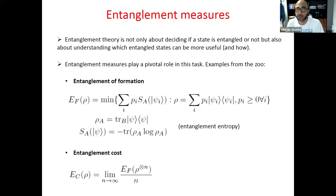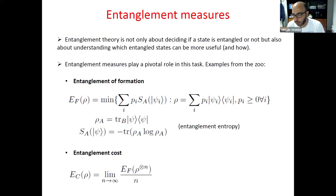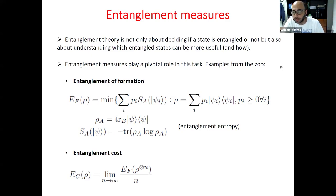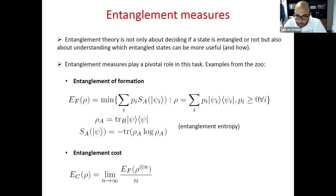Entanglement theory is not only about deciding if a state is entangled or not. We want to understand which entangled states can be more useful, and how and why. For this task, entanglement measures play a pivotal role. Since the beginning of entanglement theory in the early 90s, a myriad of entanglement measures have been defined, many of them having an operational meaning attached. This has sometimes been called the 'zoo of entanglement measures.' I will give a partial list of some measures I have chosen because they appear later, because I like them, or because they are easy to define.